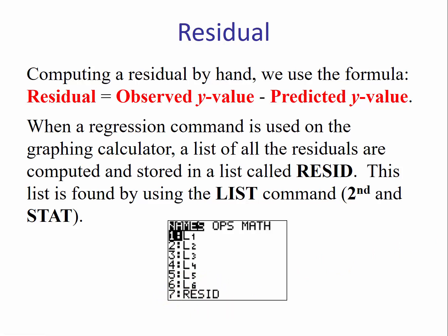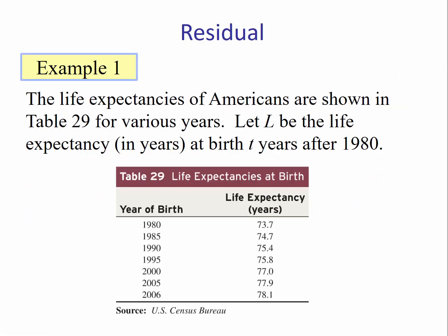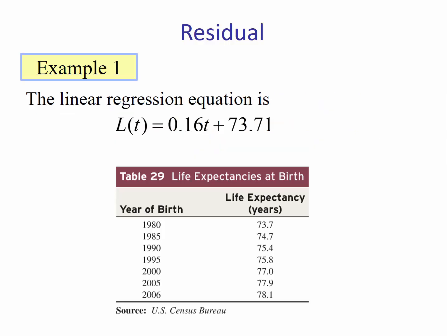Let's do an example. Example 1: The life expectancy of Americans are shown in Table 29 for various years. Let L be the life expectancy in years at birth, t years since 1980. The linear regression equation for this data set is L(t) = 0.16t + 73.71.